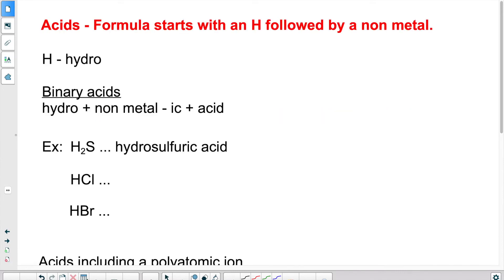Acids. There are two types of acids: acids that are binary, composed of an H with something else, another element, and acids that contain a polyatomic ion. We'll start with the basic ones.